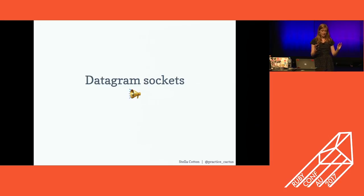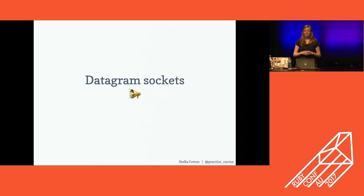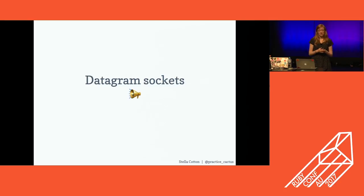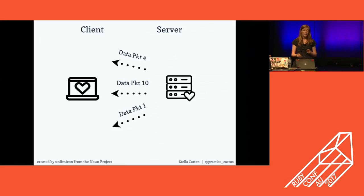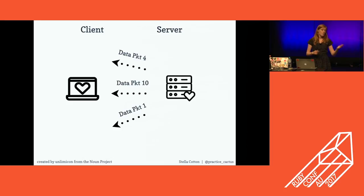On the flip side, datagram sockets are like a megaphone — they only go one way, they're unidirectional, and you don't actually care if anyone's around. There's no handshake because datagram sockets just don't care. Not only are they just yelling into a megaphone, there's no guarantee that the messages come out in the correct order. The benefit is that it's very, very fast because it uses UDP instead of TCP. Common real-world examples are multiplayer games, streaming audio, and StatsD for monitoring.